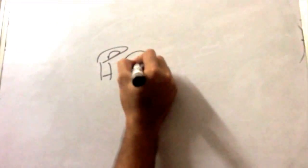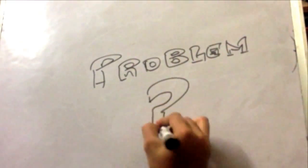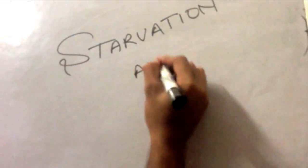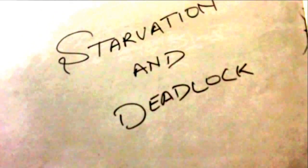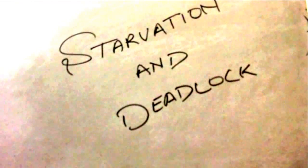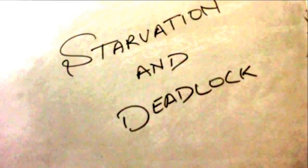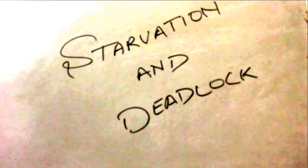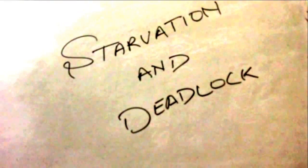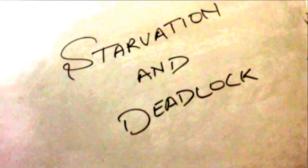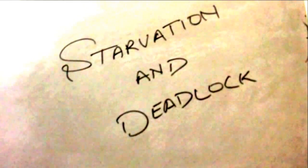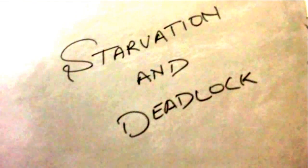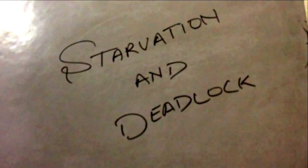There are a few problems associated with the situation. They are starvation and deadlock. Starvation is a situation where one philosopher never gets the chance to eat, thus he eventually starves and dies. Deadlock is a state where one philosopher is waiting for the other philosophers to complete eating, and the other philosophers in turn are waiting for the first one to complete eating, thus forming an unending cycle.